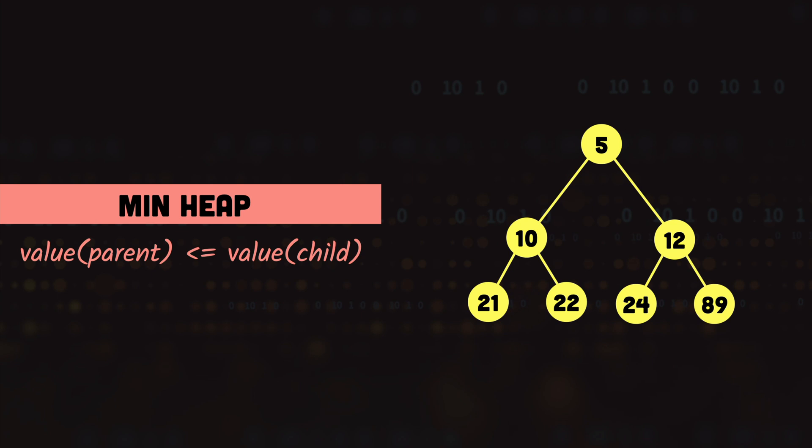If you look closely at this min heap you will notice two things: first, the value of the root node — which is 5 — is the smallest value of the tree, and also if we keep going down in the tree, the values keep increasing.